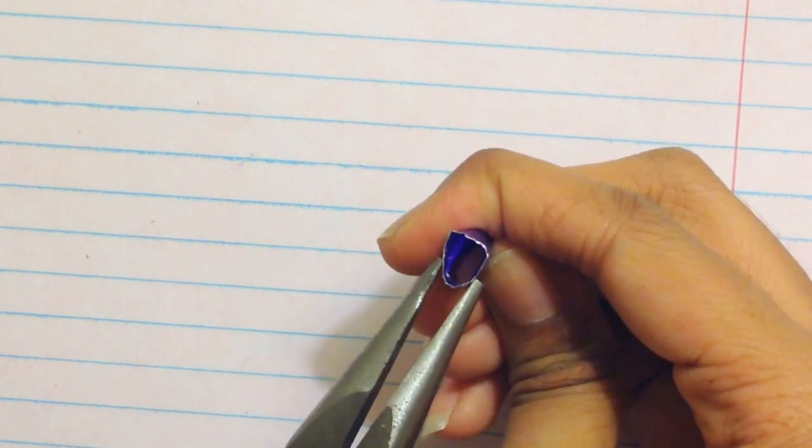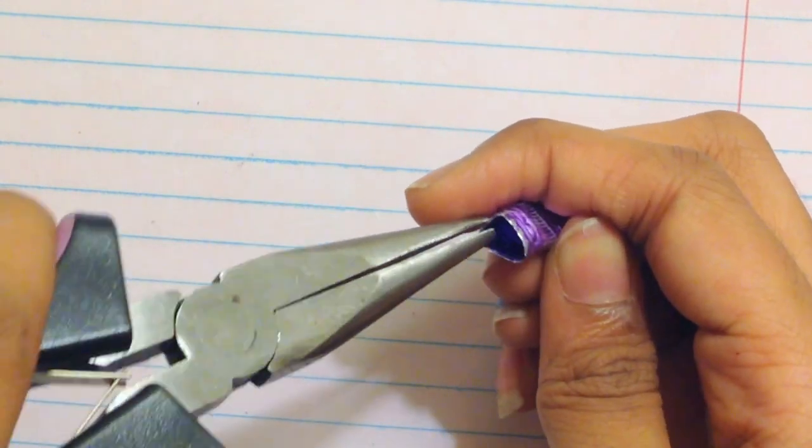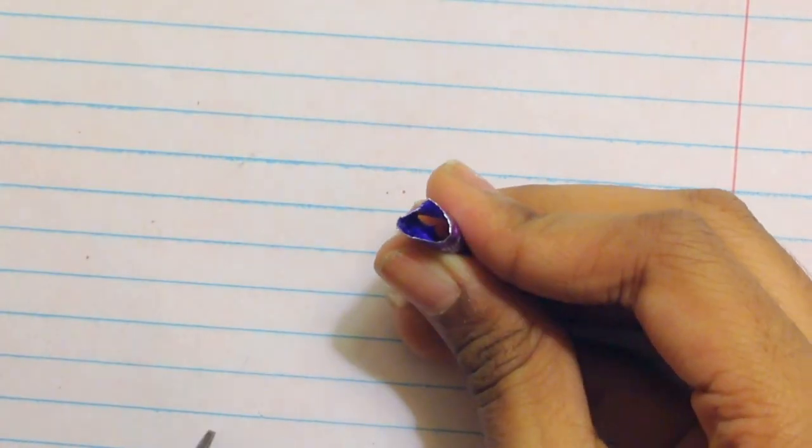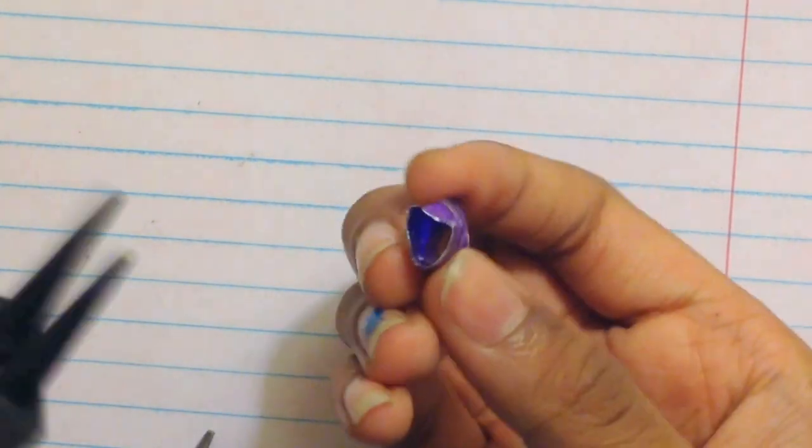Then you can go ahead and shape it into any simple cookie cutter. Why simple? Because it's harder to make it more detailed. But you want to be really careful because it is really sensitive metal and you don't want to rip it easily.